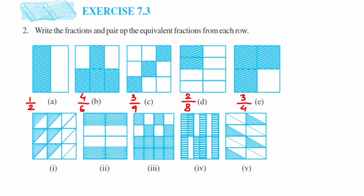In the second row, we have 18 triangles, out of which six are shaded, giving 6 upon 18. The next figure has eight rectangles as equal parts, out of which four are shaded, giving 4 upon 8.